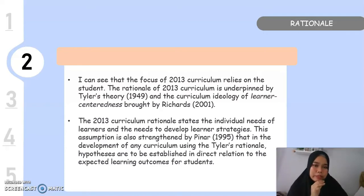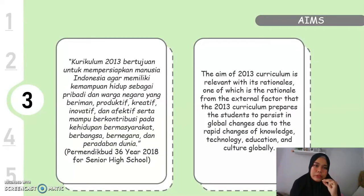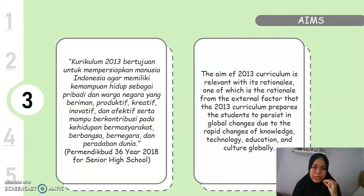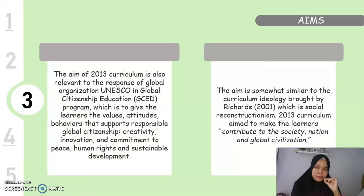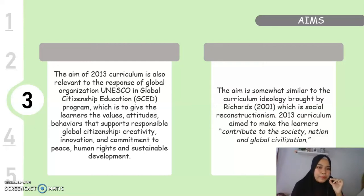The 2013 Curriculum rationale states the individual needs of learners and the need to develop learner strategies. The aim of the 2013 curriculum is relevant to its rationale, and one aim from external factors is that it prepares students to persist in global changes due to rapid changes of knowledge, technology, education, and culture globally. The aim is also relevant to UNESCO's GCED program, which gives learners the values, attitudes, and behaviors that support responsible global citizenship, similar to the curriculum ideology of Social Reconstructionism brought by Richards, 2001.